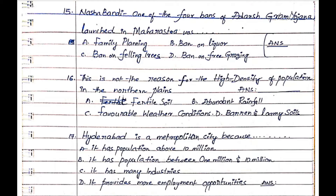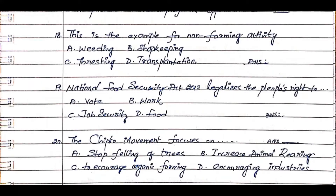Question 17: Hyderabad is a metropolitan city because. Option A. It has population above 10 million, Option B. It has population between 1 million and 10 million, Option C. It has many industries, Option D. It provides more employment opportunities. The answer is Option B. 1 million means 10 lakhs and 10 million means 1 crore.